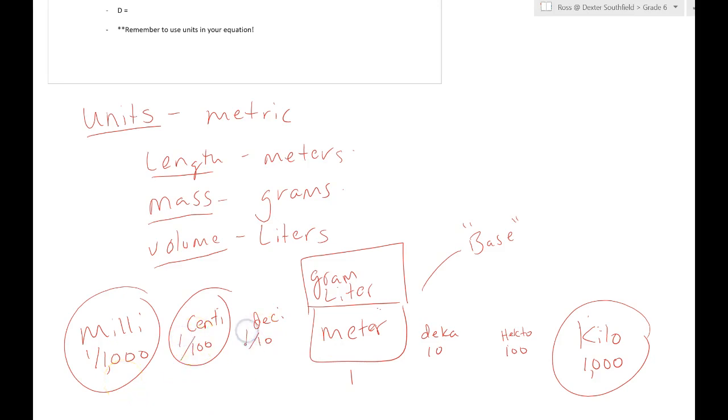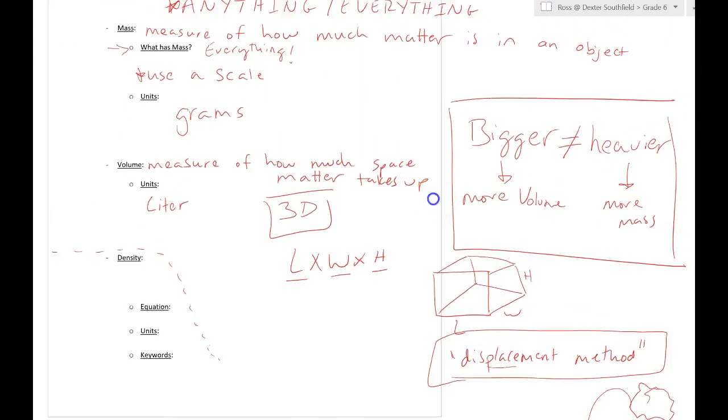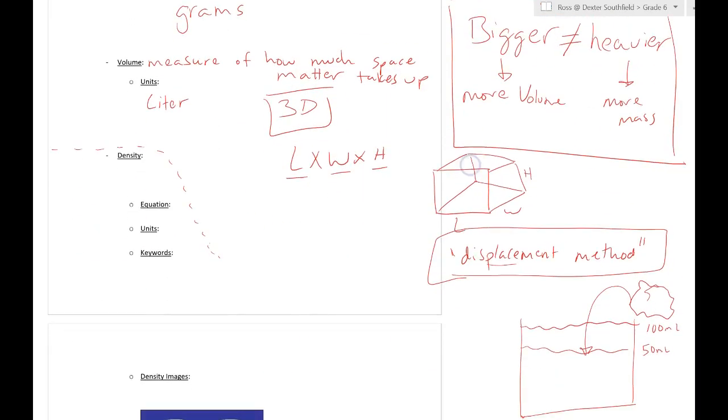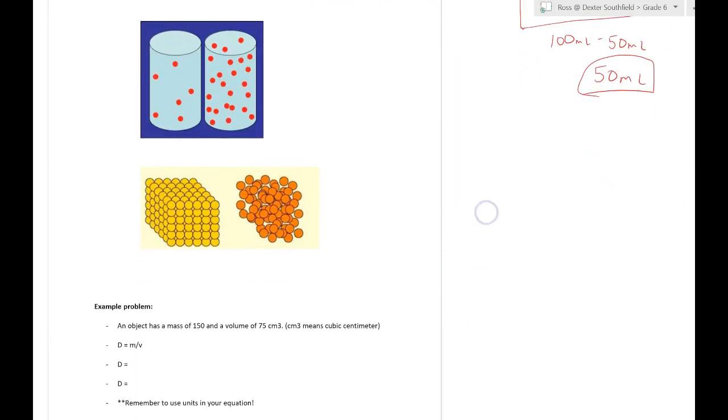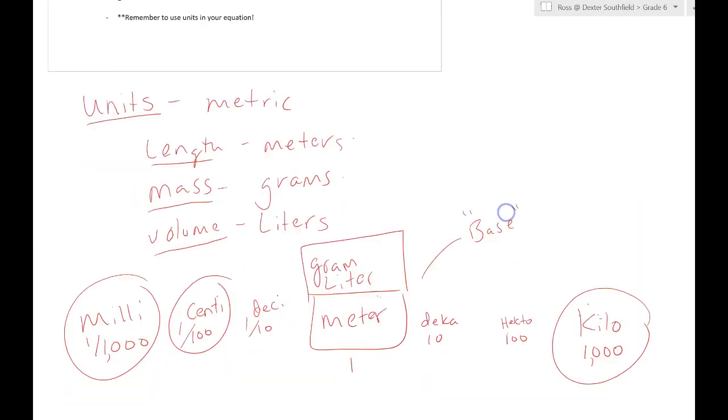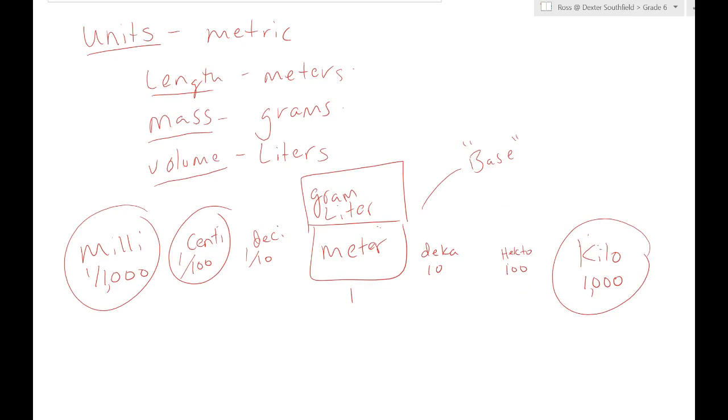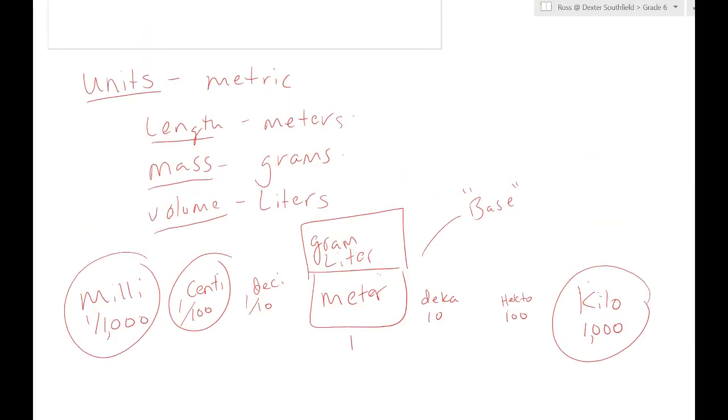This just briefly covered mass and volume—what is matter, which is just anything physical that you can touch or feel. Everything has matter, therefore everything has mass. Then just a brief talk about units and how we're going to use the metric system and some of the prefixes that go along with it. Please let me know if you've got any questions.